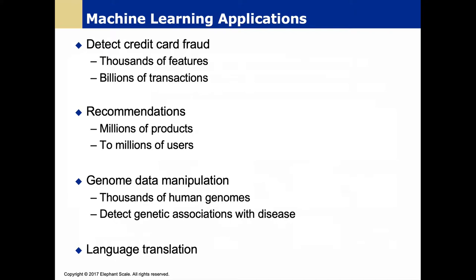Other ML applications include credit card fraud detection — a very common use case. Also recommendations involving millions of products and users. Genome data manipulation is another area: many human diseases are related to genetics, and with millions of genes and lots of combinatoric possibilities, we can use machine learning to help determine associations between genes and disease. This is currently a very common area where machine learning is being used in research science.